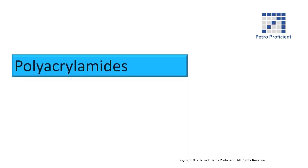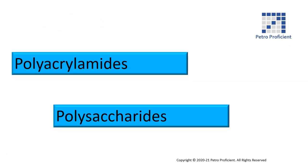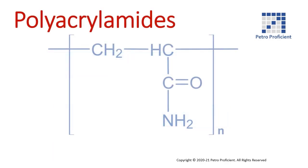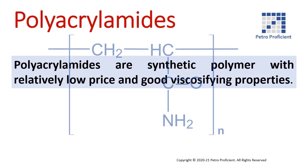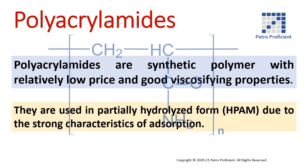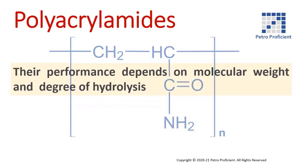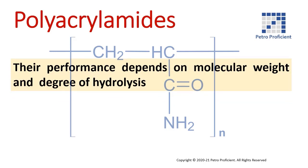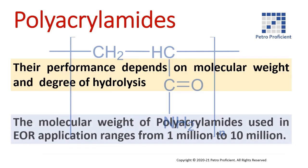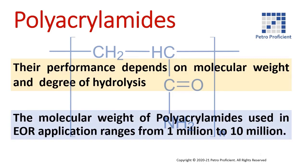Two commonly used polymers in the industry are polyacrylamides and polysaccharides. Polyacrylamides are synthetic polymers with a relatively low price and good viscosifying properties. They are used in partially hydrolyzed form due to the strong characteristics of adsorption. Their performance depends on molecular weight and degree of hydrolysis. The molecular weight of polyacrylamides used in EOR applications ranges from 1 million to 10 million.